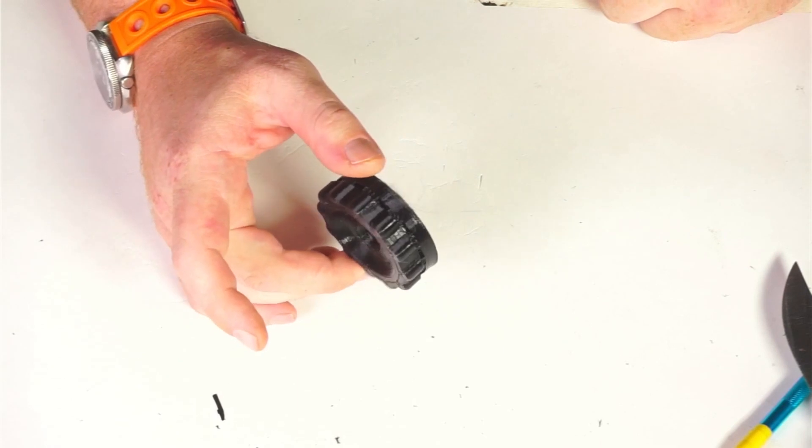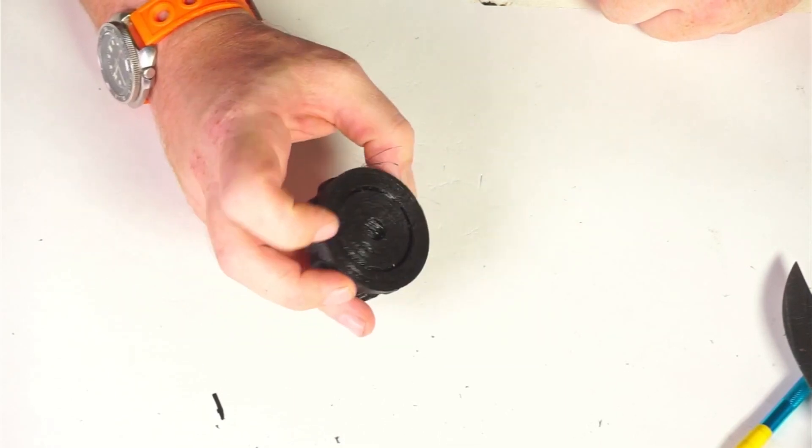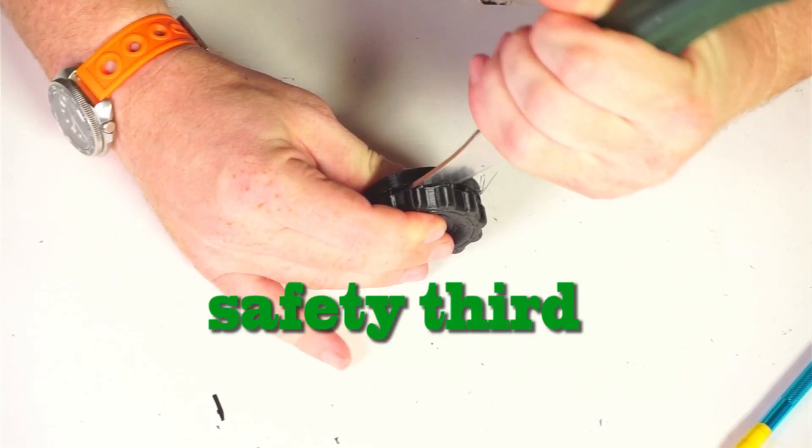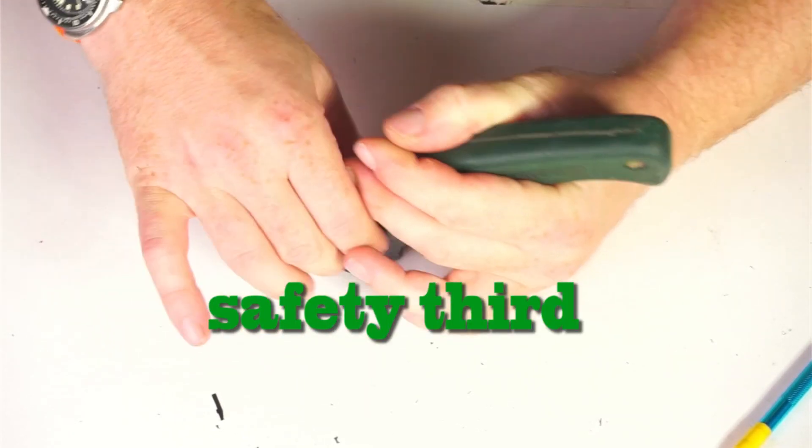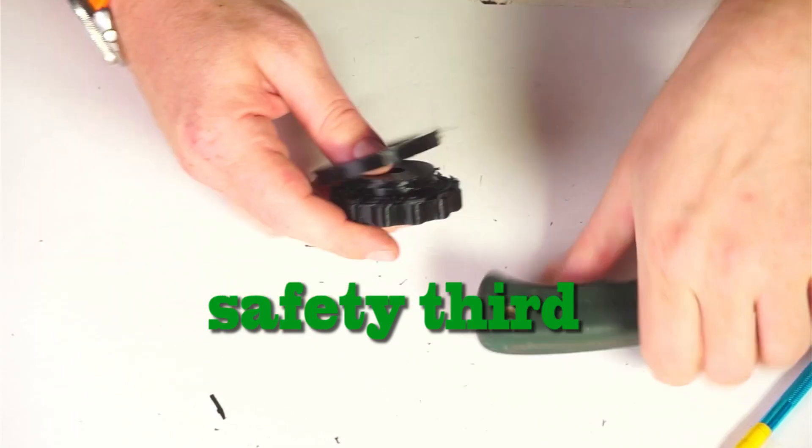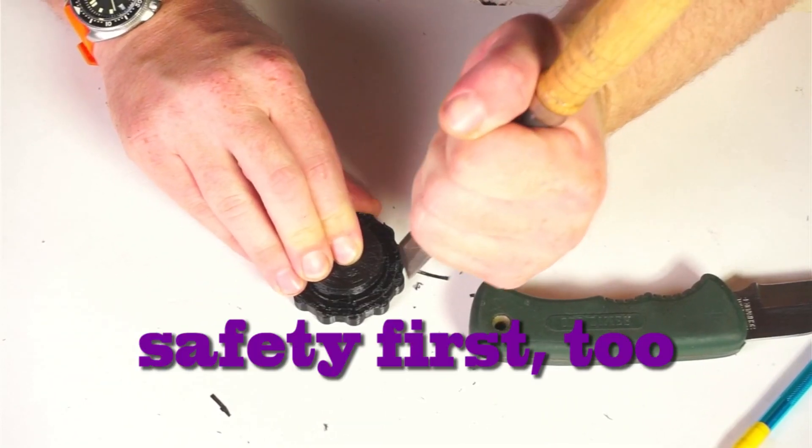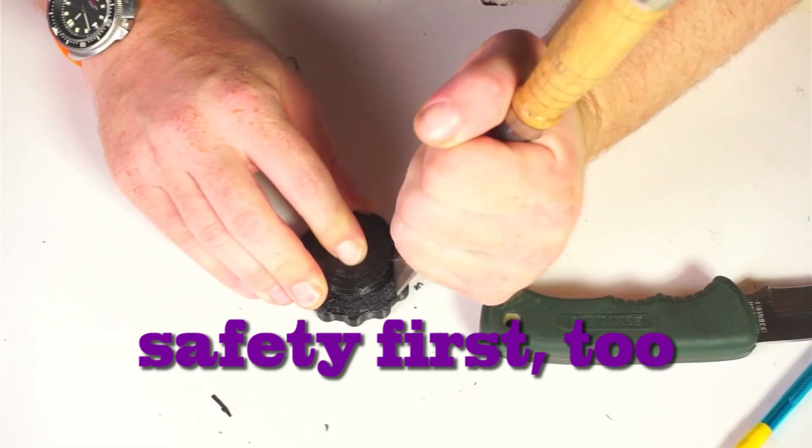Okay, this is the light baffle or spout. It prints with a bunch of the support that you got to pop off. Be careful when you're using knives in your shop. Be careful when you're using chisels to scrape your parts.